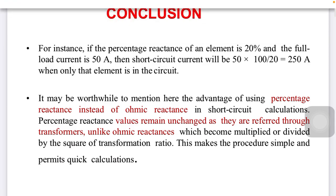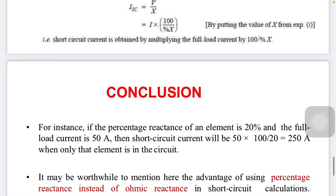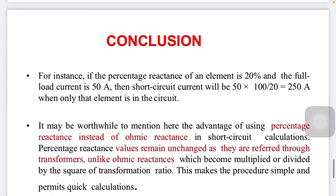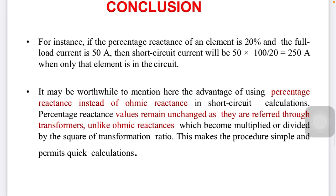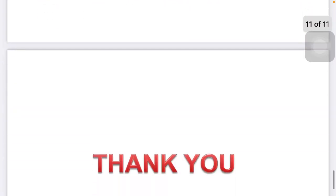It is worth mentioning the advantage of using percentage reactance instead of ohmic reactance. The value remains unchanged when referred through a transformer, unlike ohmic reactance which must be multiplied or divided by the square of the turns ratio (N²). This makes the procedure simpler and enables quicker calculations. Thank you.